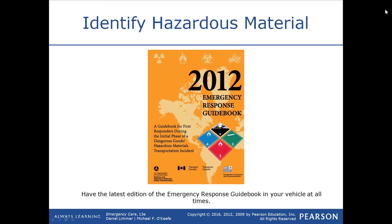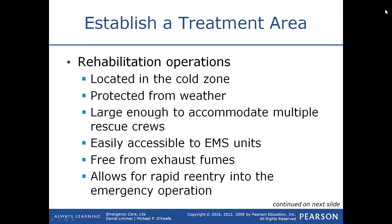Exposure — by virtue of knowing it's a hazardous scene — means you're exposed. Whether you become contaminated depends on what you do next. The Emergency Response Guidebook is published every four years. There are yellow, blue, and orange pages. If you know the four-digit number, look in the yellow pages for a three-digit guide number found in the orange pages — the safety data sheets. If you only know the chemical name, look in the blue pages.